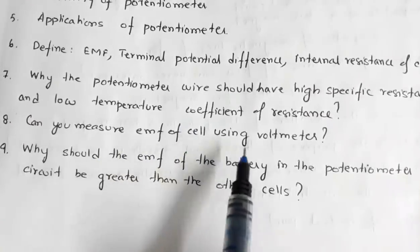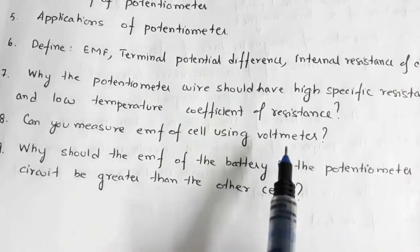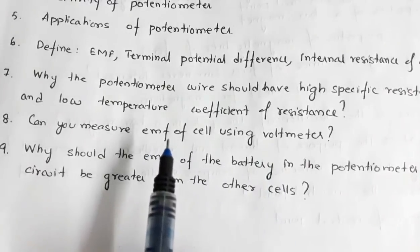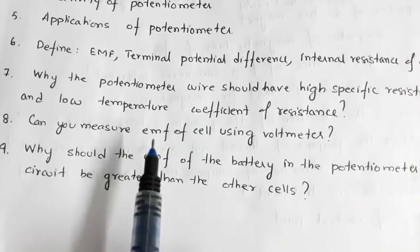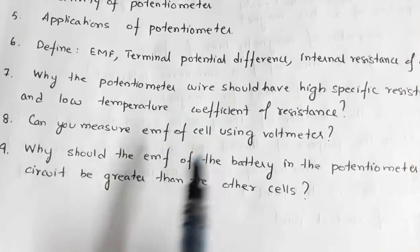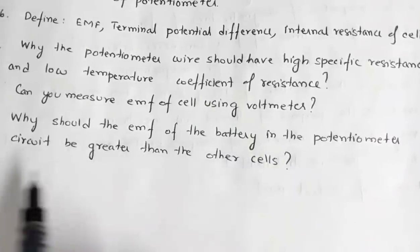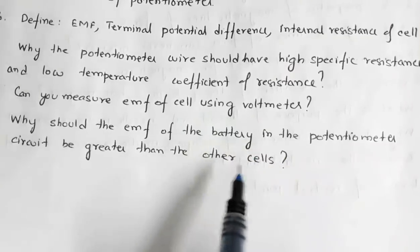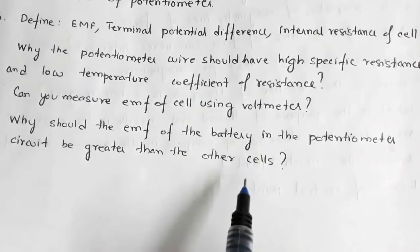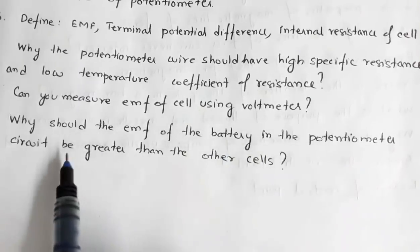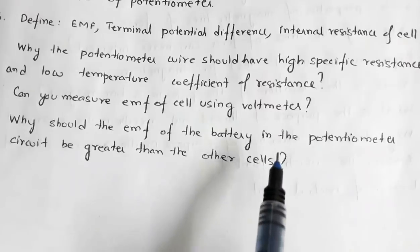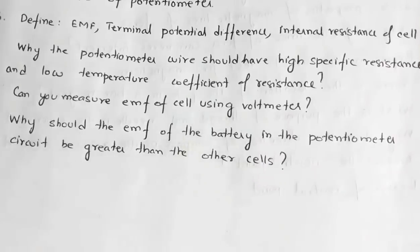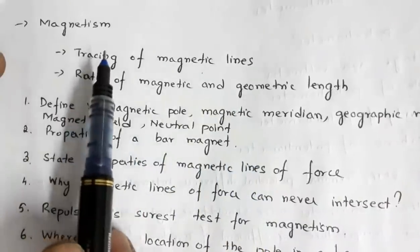Can you measure EMF of a cell using a voltmeter? The answer is no, because when you connect a voltmeter it draws current from the cell, and if current is drawn then the potential drop across the cell will not be the EMF but the terminal potential difference. Why should the EMF of the battery in the potentiometer circuit be greater than the other cells? Because otherwise the balancing length will not be obtained within the potentiometer wire.